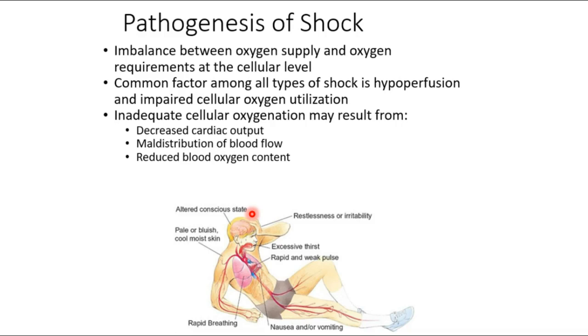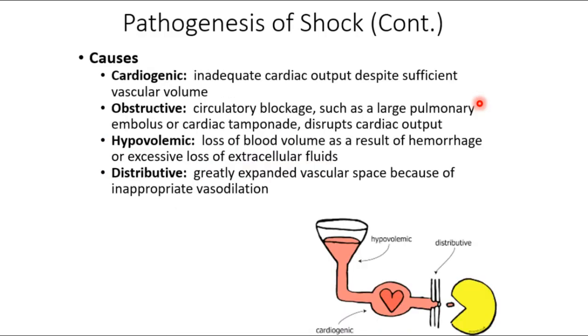Now, shock — we mentioned it last week; this is an elaboration focusing on how etiology influences treatment. Shock as a whole means you're not getting enough oxygen to tissues. The mechanism by which it's not getting there is diverse: maybe cardiac output isn't high enough, maybe blood is poorly distributed, or maybe blood is reaching tissues but has reduced oxygen content.